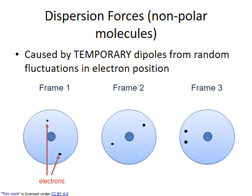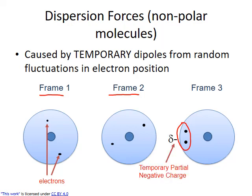In the diagram here, we see the same particle of helium over three separate frames representing three different points in time. In frame one and frame two, the electrons are located on opposite sides of the nucleus — they balance each other out, and no partial positive or negative charges develop. In frame three, however, the random motions of the electrons result briefly in both electrons being on the same side of the nucleus, causing a temporary partial negative charge to develop on that side.